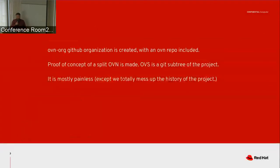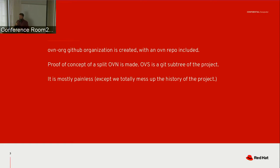Starting in April, the OVN GitHub organization got created, there was an OVN repo in it, and we did a brief proof of concept OVN split. It turned out to be easier than we expected. The thing is, what we did to mitigate some of the difficulties was we made OVS a git subtree in the project, and we kind of completely ignored the actual history aspect. So if you tried to look at git logs, you would not be very happy with what you saw.